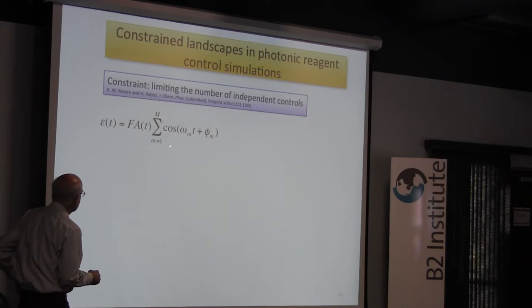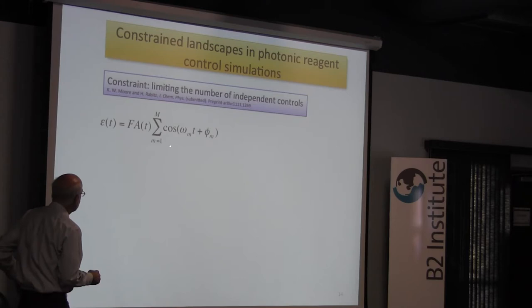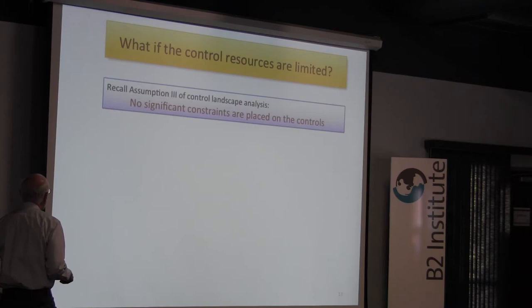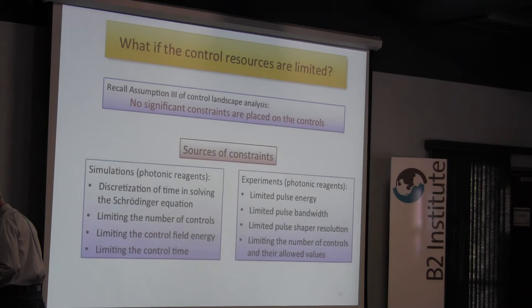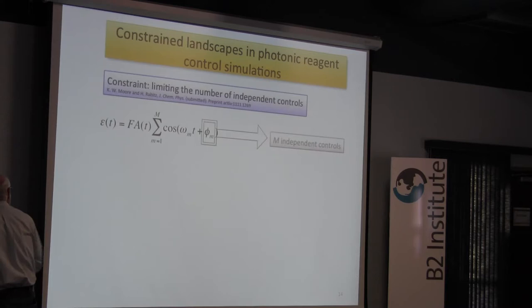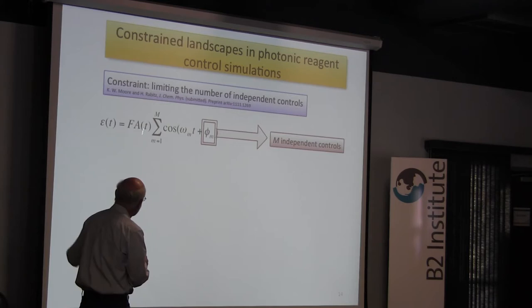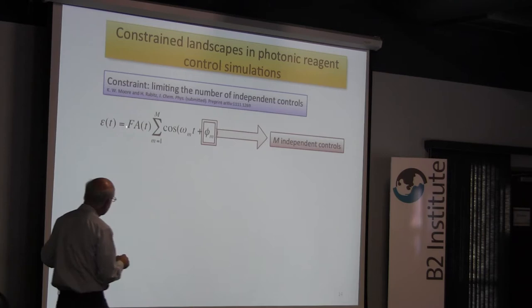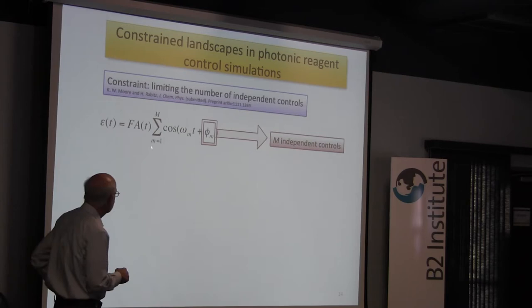We write the field as a Fourier series, and the controls are the Fourier coefficients. There are m controls — a series of m terms in these phases. The amplitude envelope A(t) is a fixed Gaussian function, and F is the coefficient in front, which will ultimately be a variable. F controls the amplitude, or the energy, of the pulse. So let's fix F and vary the number of controls m. If m is large, you reach the top again — state-to-state, climbing, no constraints.